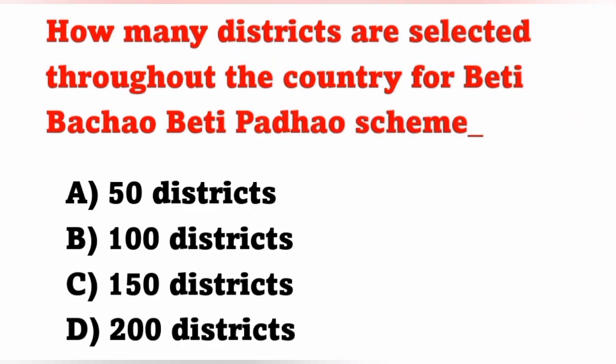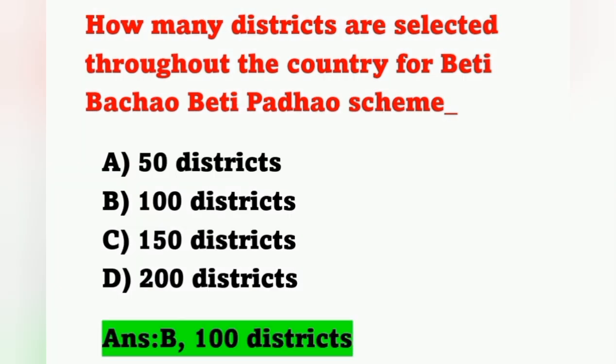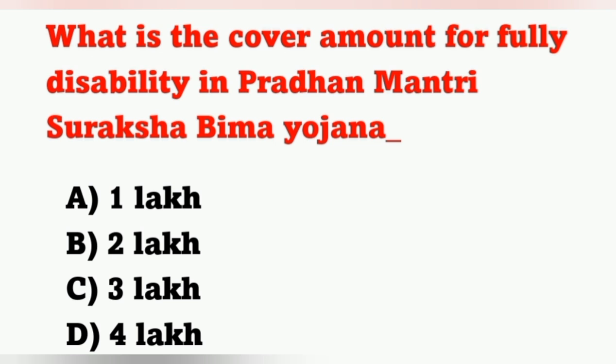Next question: How many districts are selected throughout the country for Beti Bachao Beti Padhao scheme? Options: A) 50 districts, B) 100 districts, C) 150 districts, D) 200 districts. The total districts selected throughout the country is 100. Option B is the correct answer.